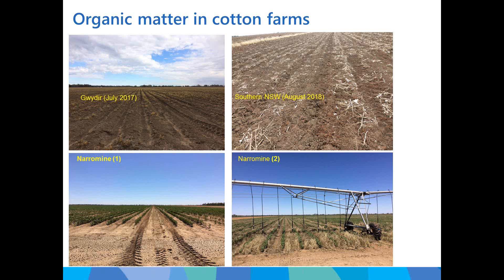Photos of cotton fields across valleys illustrate different organic matter levels. One field in Moree came out of chickpea rotation going into cotton; another in southern NSW had stubbles incorporated. Growers report that retaining stubbles provides good protection to cotton seedlings and healthy establishment — one of the best management practices to improve soil organic carbon and soil health.